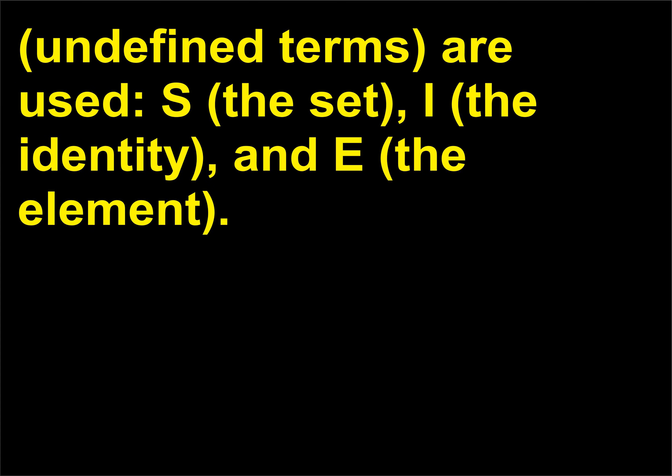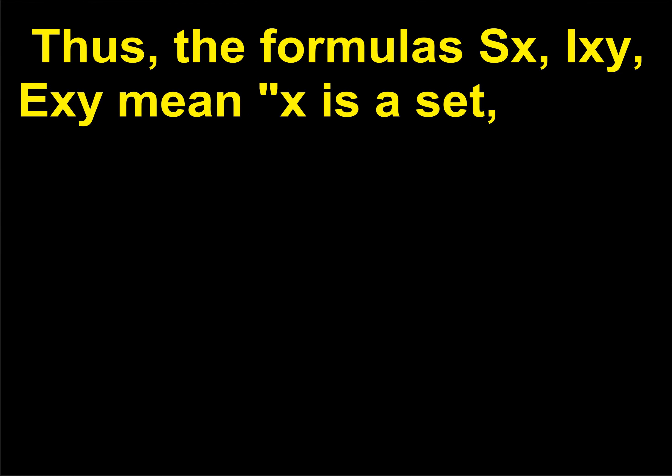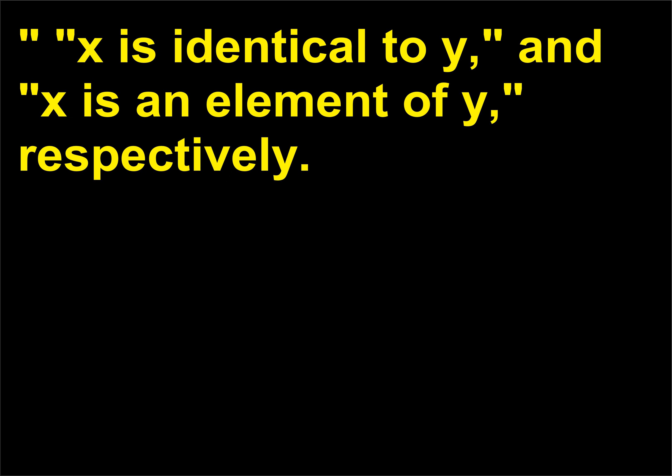The three primitives are: S, the set; I, the identity; and E, the element. Thus, the formulas S(x), x=x, and xEy mean 'x is a set,' 'x is identical to y,' and 'x is an element of y,' respectively.